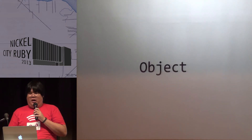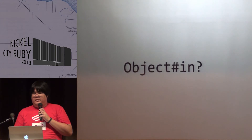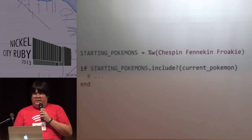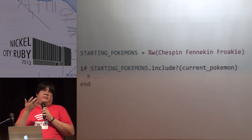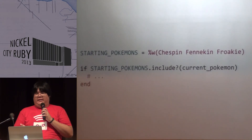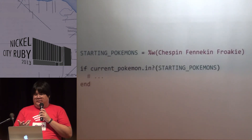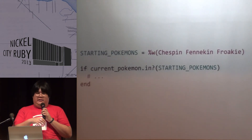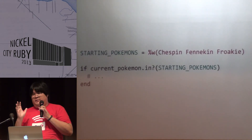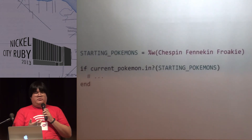Next is object.in?. This is very useful for readability. Normally in Ruby you would write something like starting_pokemons.include?(current_pokemon). But with this you can rewrite it so you're asking the object if it's in the array, and it actually reads better.